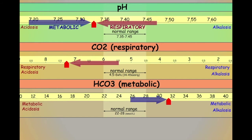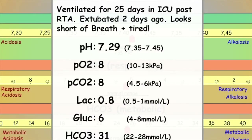Hopefully you are now beginning to develop a good understanding of how respiratory and metabolic compensation occurs. Let's finish by looking at a couple of examples of ABGs. Here we have an example of an ABG that represents quite a typical scenario that we'd see in an ICU environment.